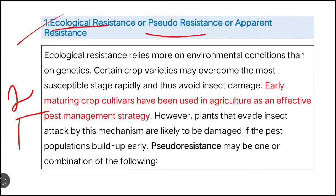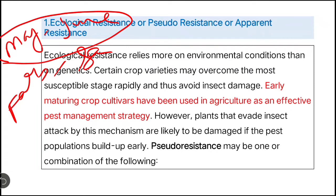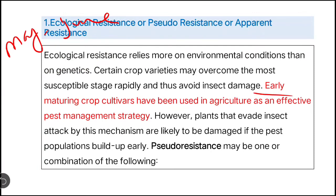For example, if an insect comes in May-June to cause damage to the crop, and you sow the crop early — in February or March — then by May-June the crop has already passed that susceptible stage or even been harvested. Early maturing cultivars have been used in agriculture as an effective pest management strategy. However, plants that evade insect attack by this mechanism are likely to be damaged if the pest population builds up early as well — in that case, your resistance will fail. That is why ecological resistance is known as pseudo-resistance — it is not genetics.